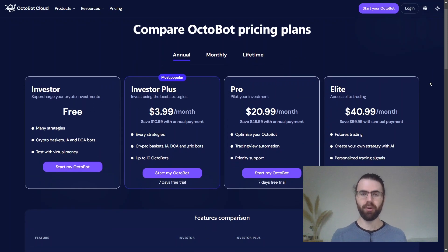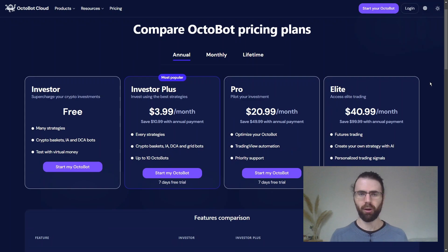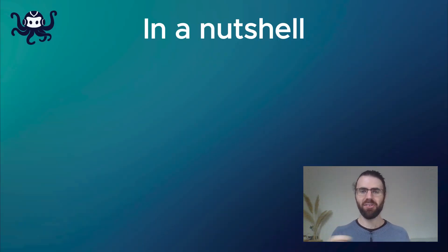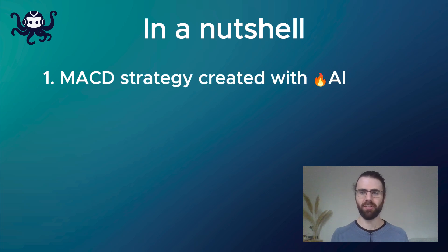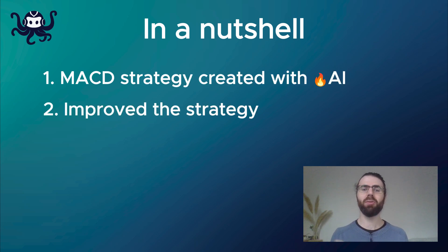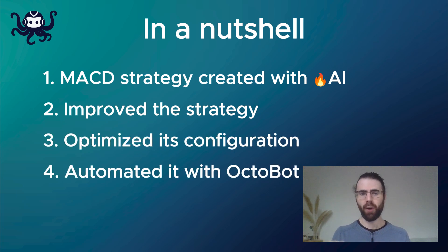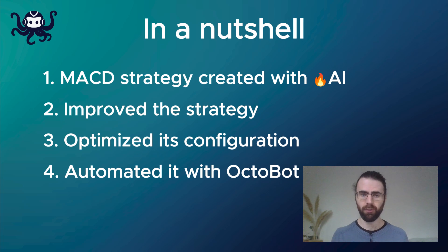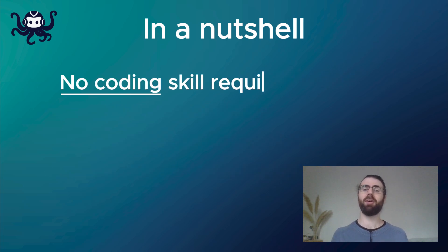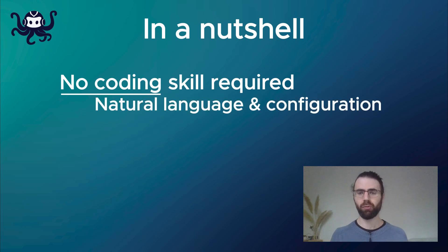Each new alert will directly be sent to this new bot, and you will apply this strategy and start making real gains. You can do all of this at home — all you need is an Octobot Cloud pro plan. This pro plan comes with a free trial of seven days, so you can test everything during a whole week. And you don't need a TradingView subscription. Because we are using email alerts, you can do everything with a free TradingView account. All of this requires no coding skill at all — it's just natural language and configuration.